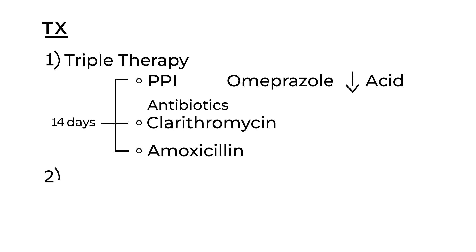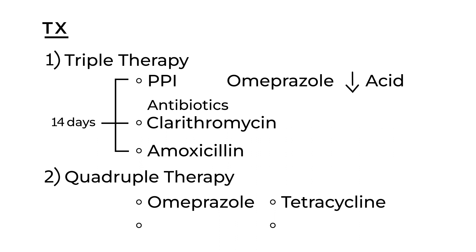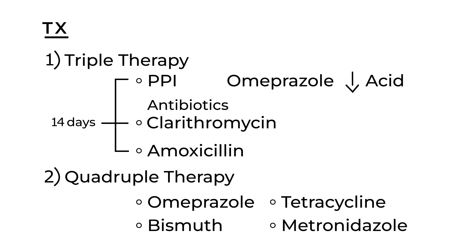The other treatment option is quadruple therapy, which has four medications: a proton pump inhibitor such as omeprazole, the antibiotic tetracycline, bismuth, and another antibiotic metronidazole. Quadruple therapy is usually the more common of the two regimens.